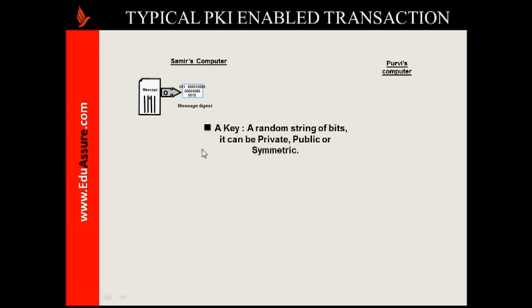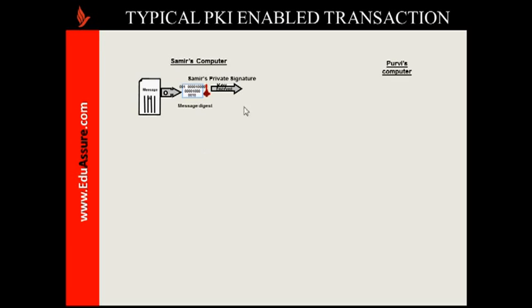A key is a random string of bits and can be of three types: a private key, a public key — which comes as part of the key pair from a certifying authority — or a symmetric key. The next process is applying the sender's private key on the message digest. The resultant thing is a digital signature, which is the message digest on which the sender's private key has been applied. This digital signature is then combined with the clear text message and the sender's digital signature certificate, which also contains the sender's public key.